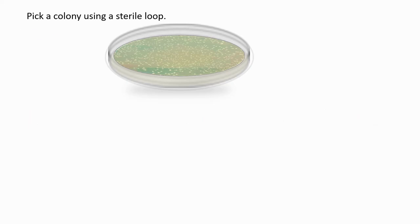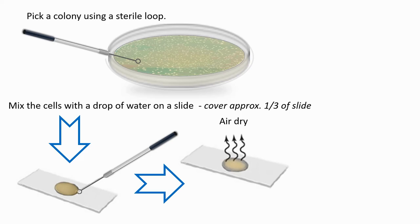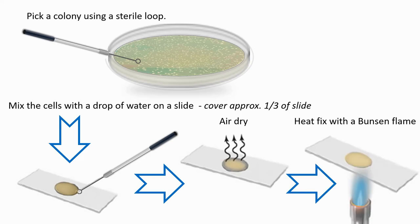Taking cells from the culture: first, pick a colony using a sterile loop, then mix the cells with a drop of distilled sterile water on a glass slide. Allow the slide with the cells and water to air dry. Finally, pass the glass slide through a blue Bunsen flame two or three times to heat fix the cells to the slide. Remember, do not overheat the slide, as this can alter the cells and affect the staining.